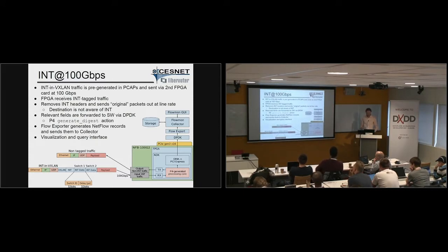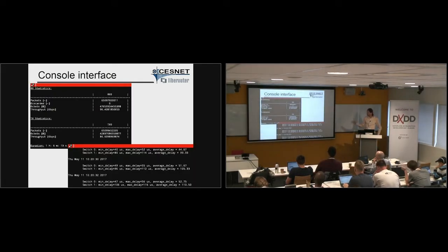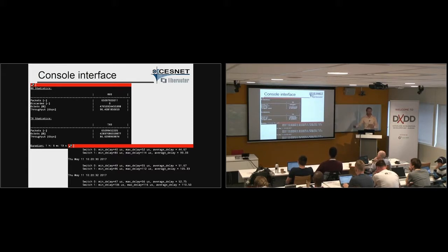Another thing the card does is export the monitoring-related information to the software — P4 has a 'generate digest' keyword for that. In the software, there is a DPDK API to receive this information, a flow exporter from Flowmon, which exports the statistics to the collector. The collector provides the visualization and analysis interface. The console interface shows numbers of packets, bytes, and so on. Interestingly, the input throughput is bigger than the output throughput because the output packets are shorter — we removed the headers, so that does make sense.